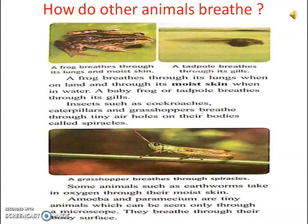Now let's see how other animals breathe. A frog breathes through its lungs when on land and through its moist skin when in water. A baby frog, also called a tadpole, breathes through its gills. Insects such as cockroaches, caterpillars, and grasshoppers breathe through tiny air holes on their bodies called spiracles. Some animals such as earthworms take in oxygen through their moist skin. Amoeba and paramecium are tiny animals which can be seen only through a microscope; they breathe through their body surface.